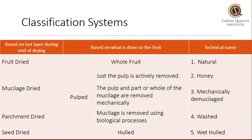There's fruit-dried coffee, which means the whole fruit is still there, and that's natural. There is mucilage-dried coffee, which is pulped and the pulp is actively removed, or the pulp and part or the whole of the mucilage is removed mechanically. In the case where the pulp is actively removed, that's usually a honey coffee. In the case where the pulp and part or whole of the mucilage are removed mechanically, that's mechanically demucilaged coffee. There's also parchment-dried coffee, which is pulped but then the mucilage is removed using biological processes — we call that fermentation — and that is known as the wash process. Finally, we have seed-dried coffee, which is pulped but then hulled while the coffee is still relatively wet, and its name is wet-hulled.